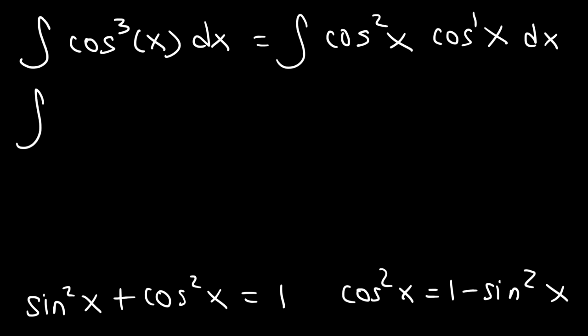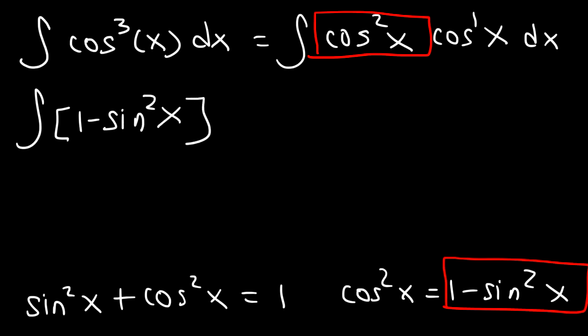And so, let's replace cosine squared with 1 minus sine squared. So, we're going to have 1 minus sine squared, and then times cosine x dx.